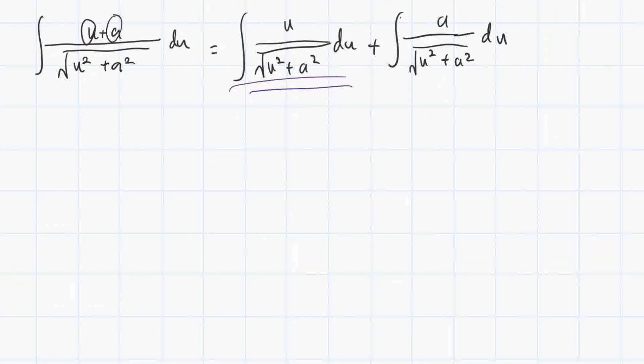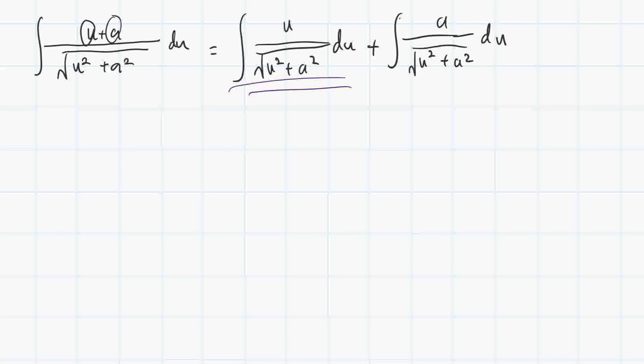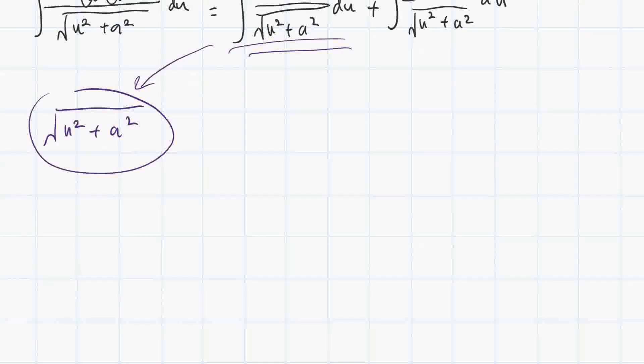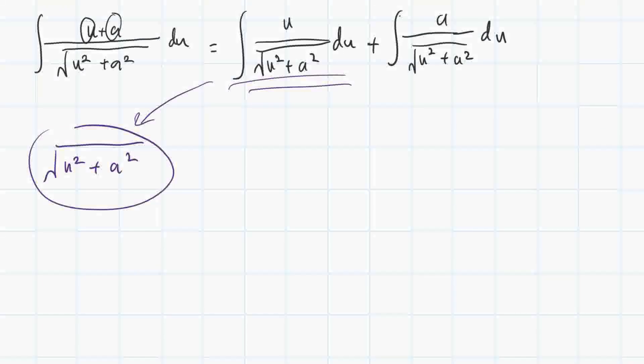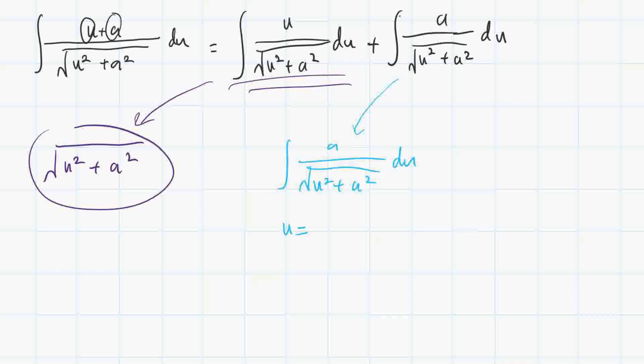You can already see how you can do that by doing another substitution. I'm just going to write out the answer. The answer is u squared plus a squared. That's the indefinite integral of this part. Now the second one requires some more substitution. We do a trig substitution. The substitution we want to make is u equals a tangent of theta.